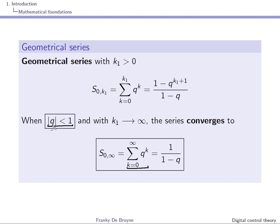If q in modulus is smaller than 1 but tends to 1, we'll have a sum that will grow, and this is what you see: 1 over 1 minus q tends to infinity as q tends to 1. So this result makes sense. Do not forget to use this hypothesis on q. We will use this later on in the course when we talk about Z transforms, and we'll use the definition of the Z transform to find the Z transform of some sequences.